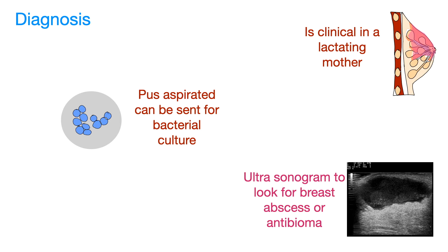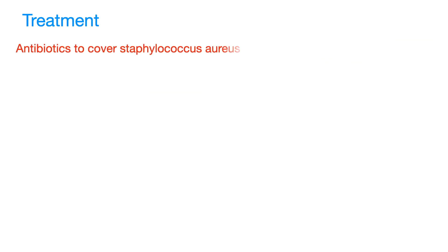Ultrasonogram may also reveal an antibioma if an antibiotic is used in the presence of undrained pus. An antibioma is a large, sterile, brownish erythematous swelling.